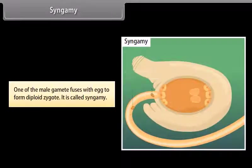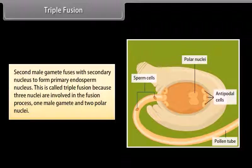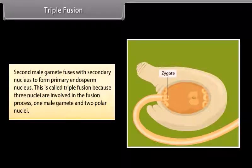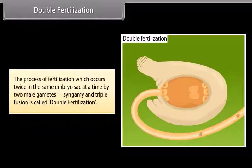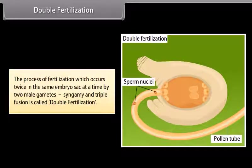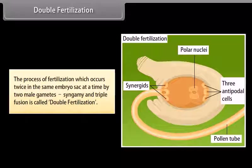Syngamy: One of the male gametes fuses with the egg to form a diploid zygote — this is called syngamy. Triple fusion: The second male gamete fuses with the secondary nucleus to form the primary endosperm nucleus. This is called triple fusion because three nuclei are involved — one male gamete and two polar nuclei. Double fertilization: The process in which fertilization occurs twice in the same embryo sac at the same time by two male gametes — syngamy and triple fusion — is called double fertilization.